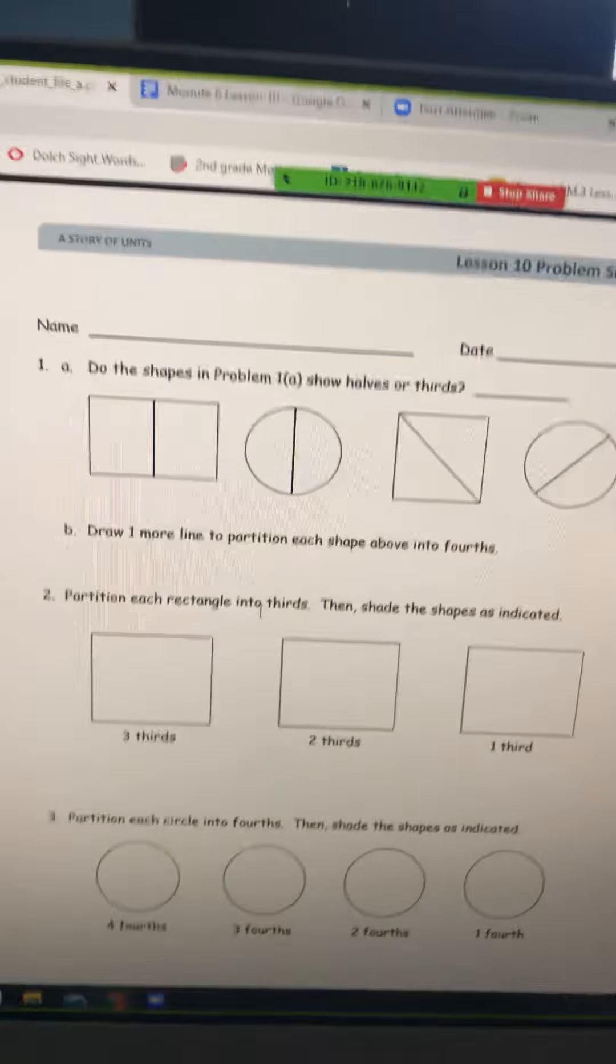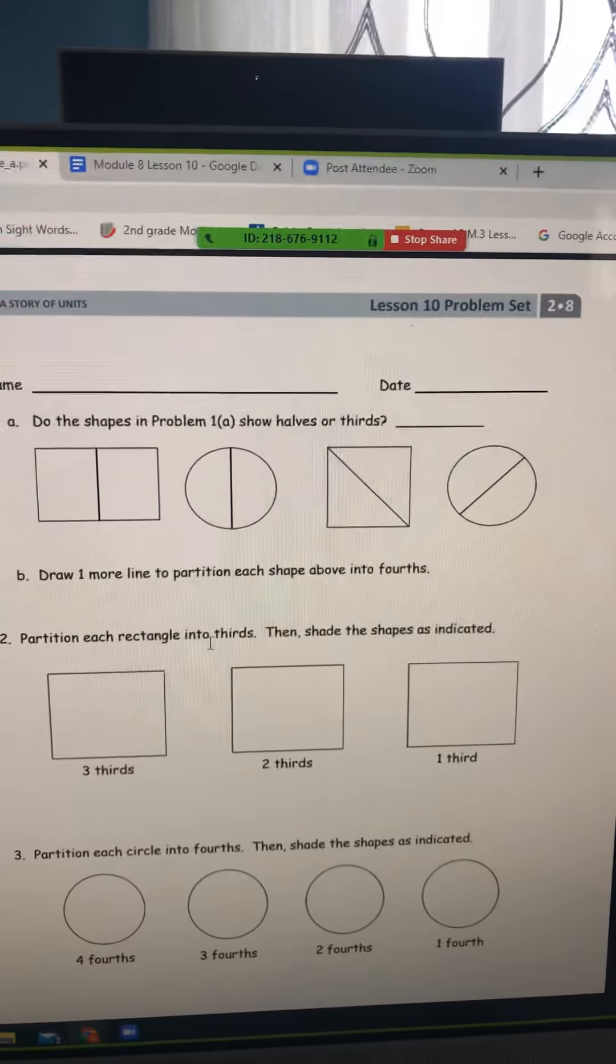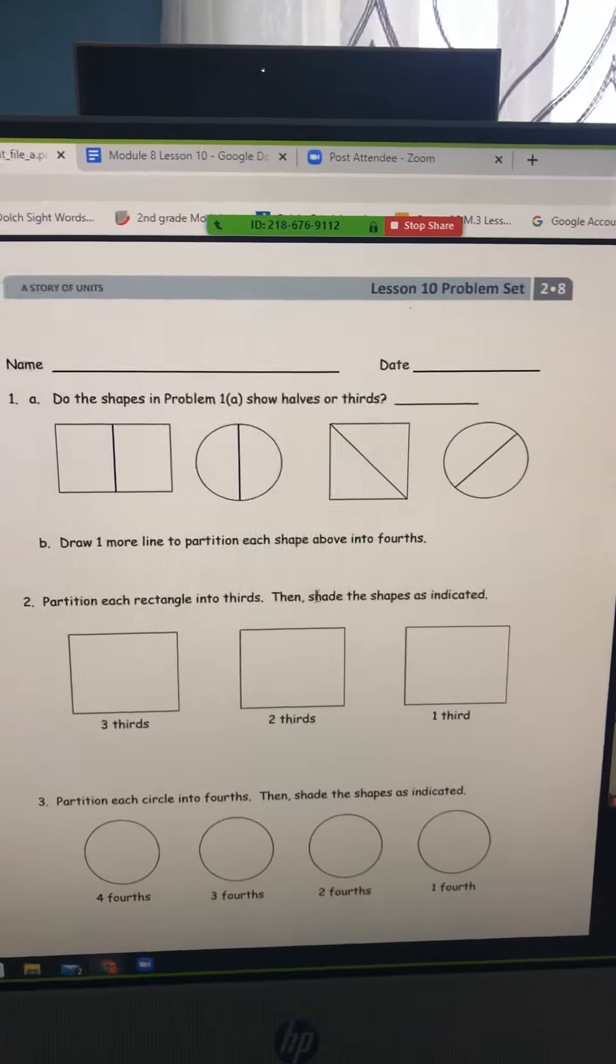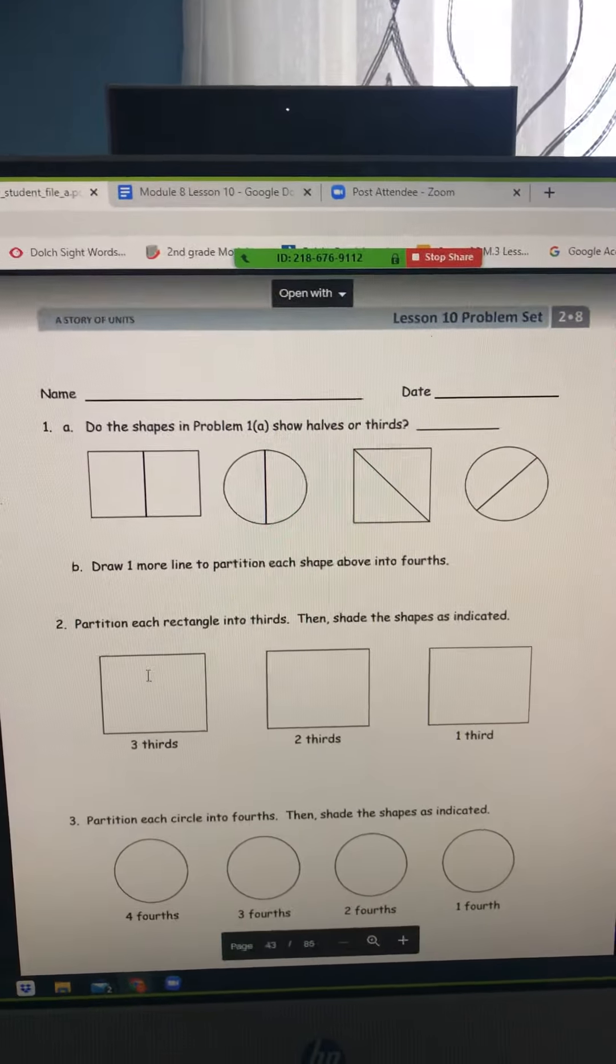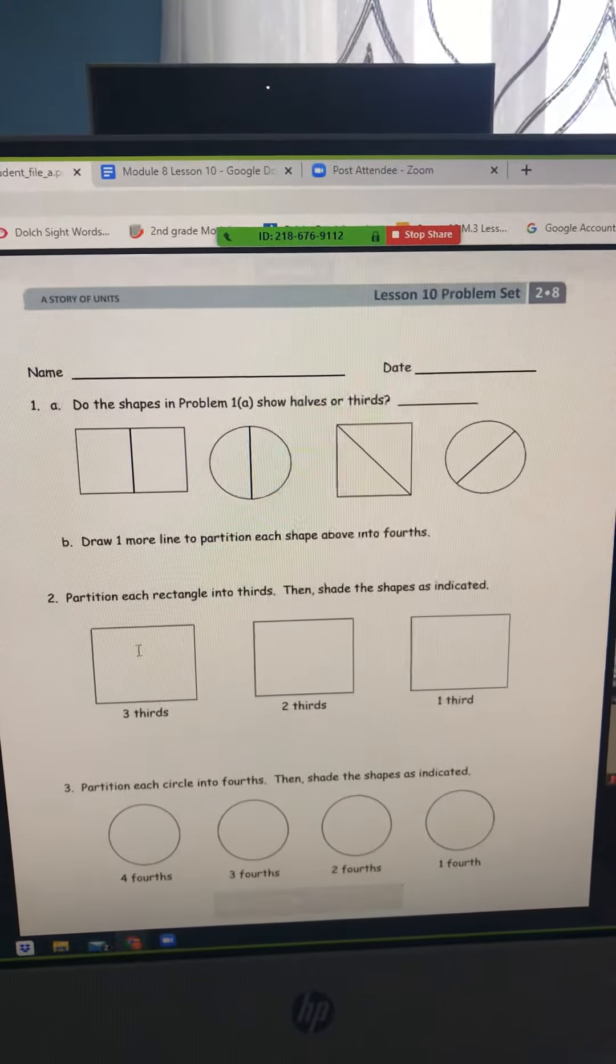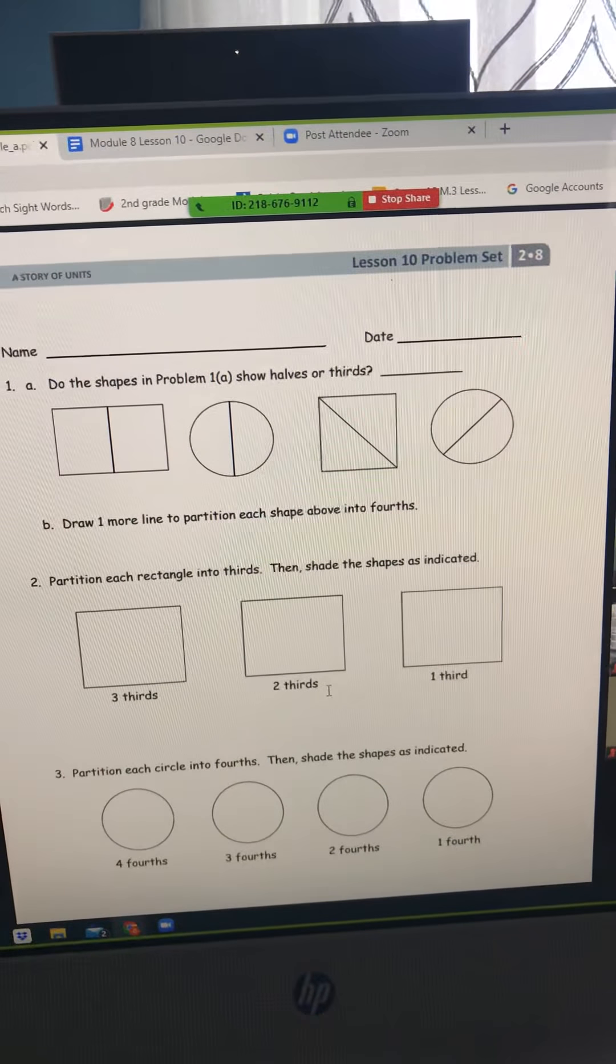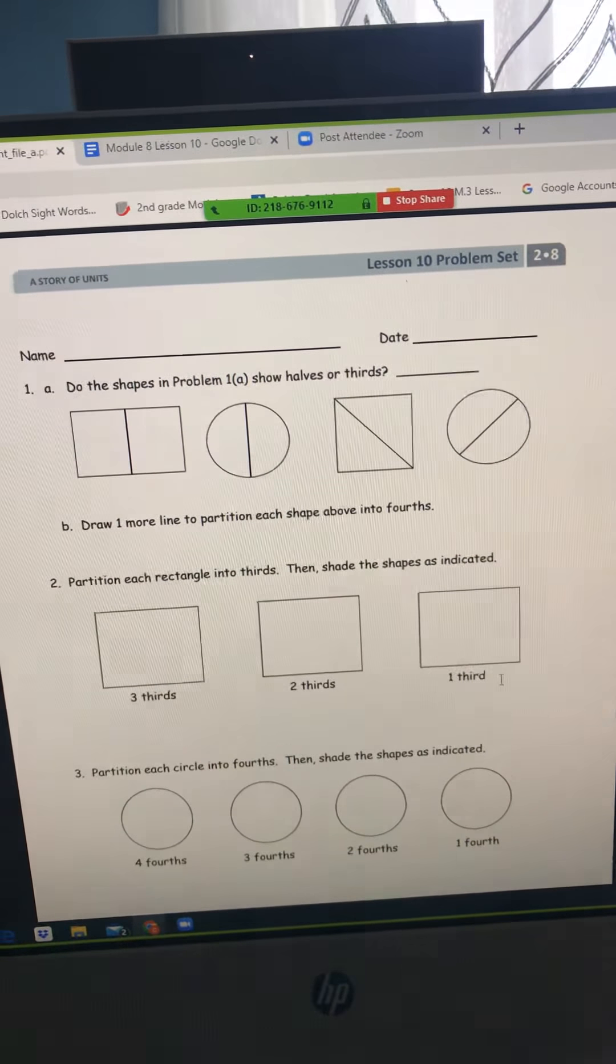Question two. Partition each rectangle into thirds. Thirds means how many equal pieces? Think about it. Then shade the shapes as indicated. So you have to partition it into thirds and shade in three thirds, shade in two thirds, shade in one third.